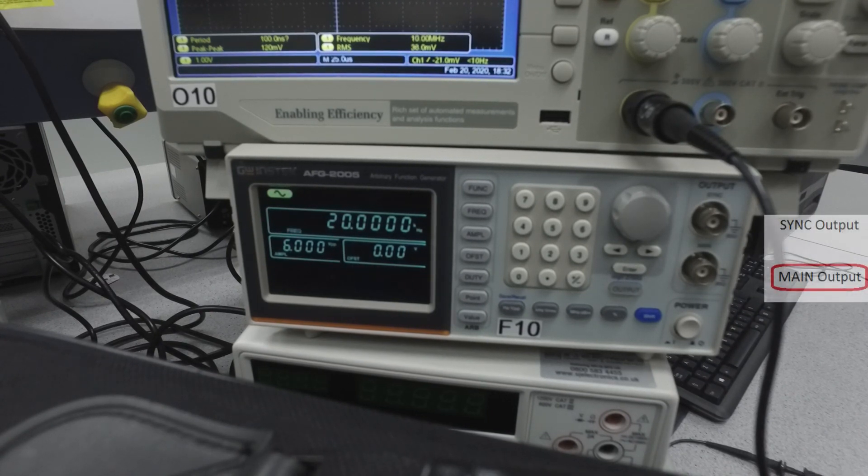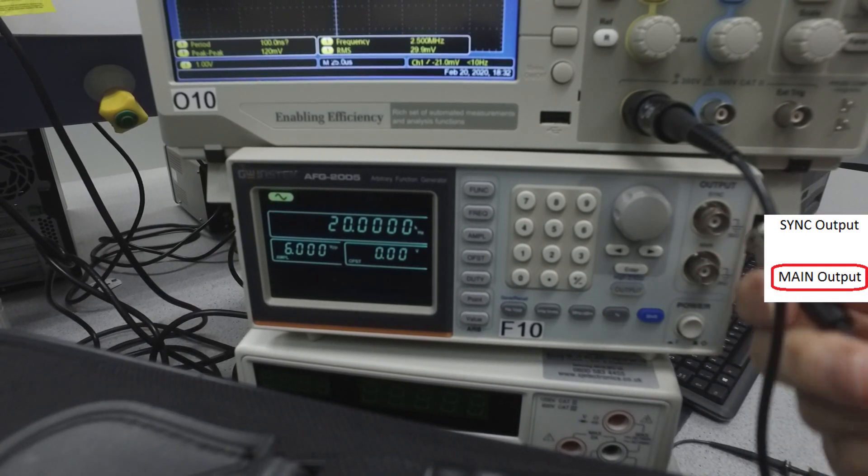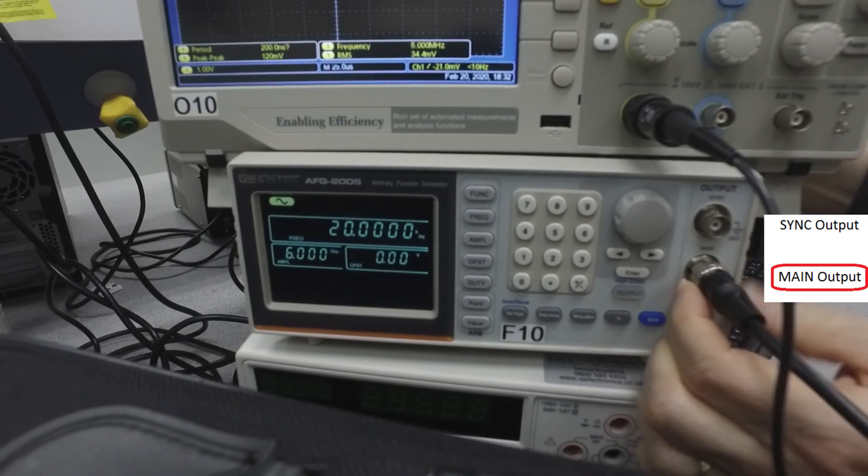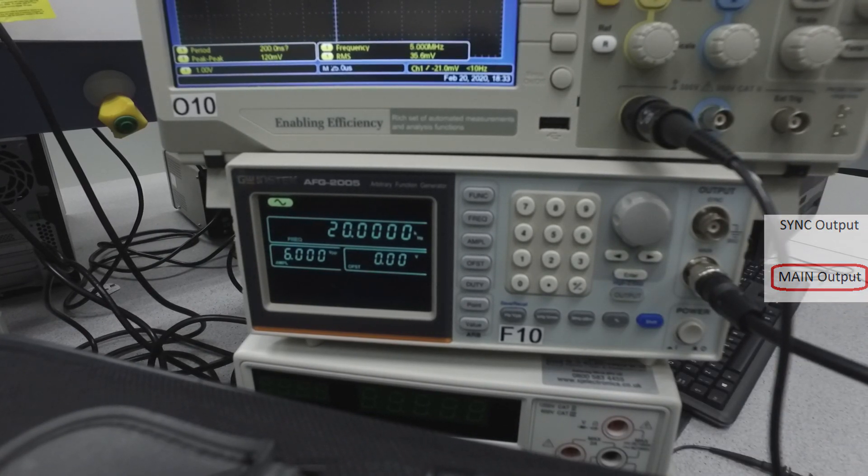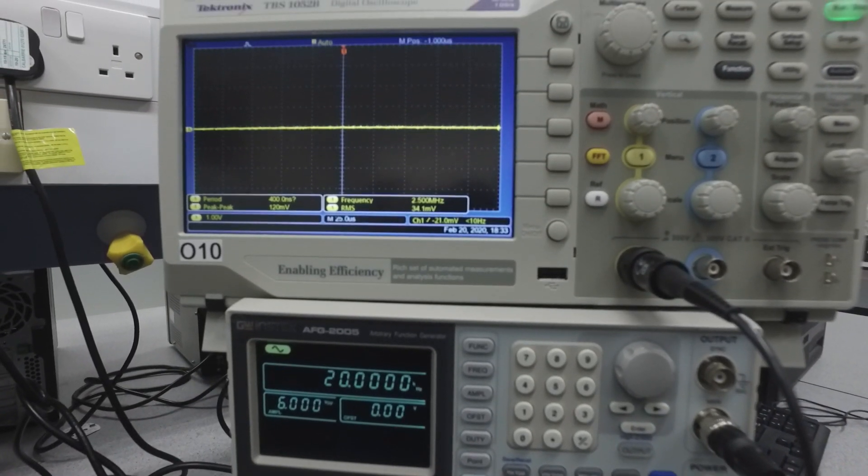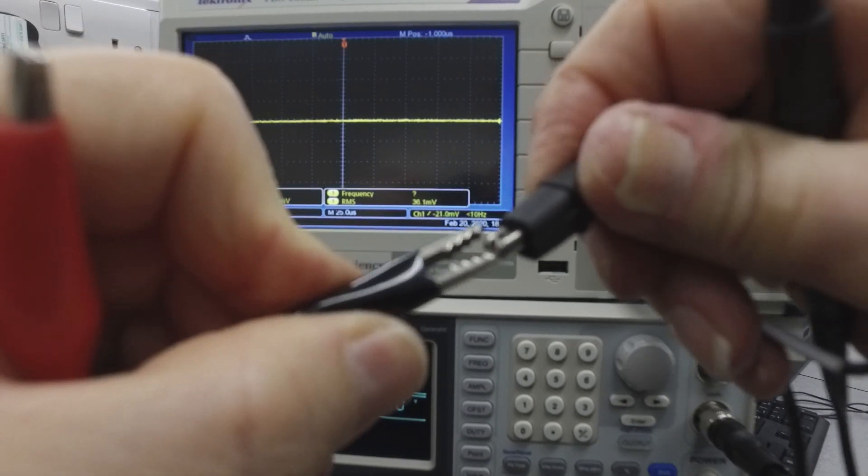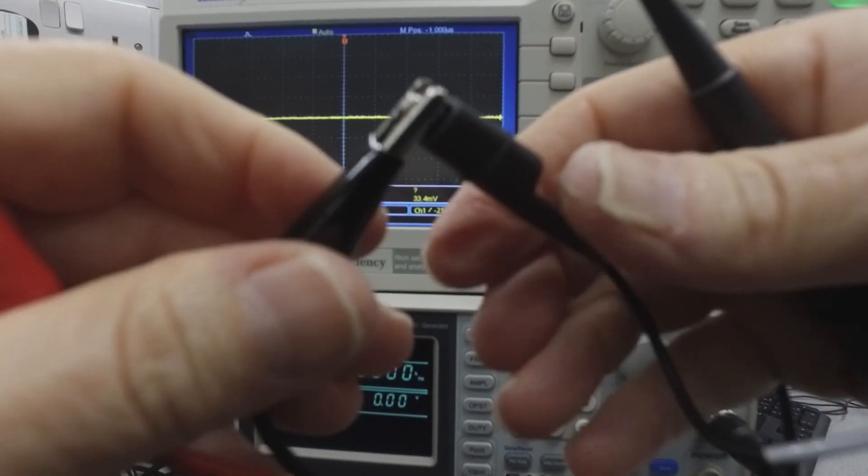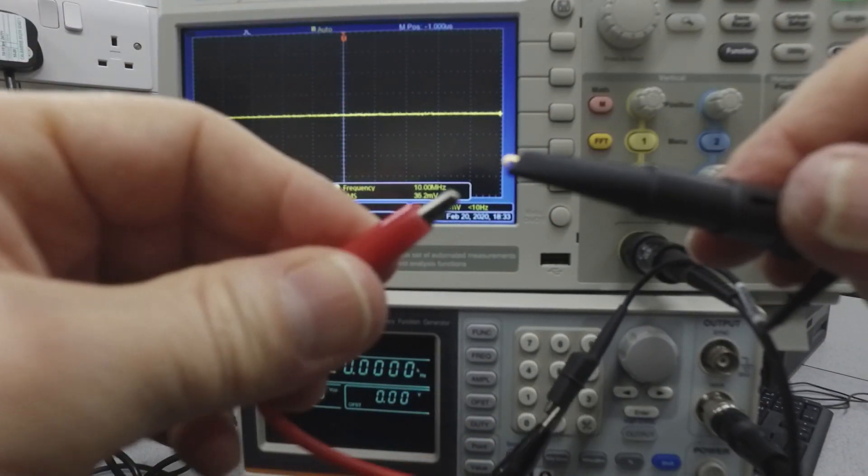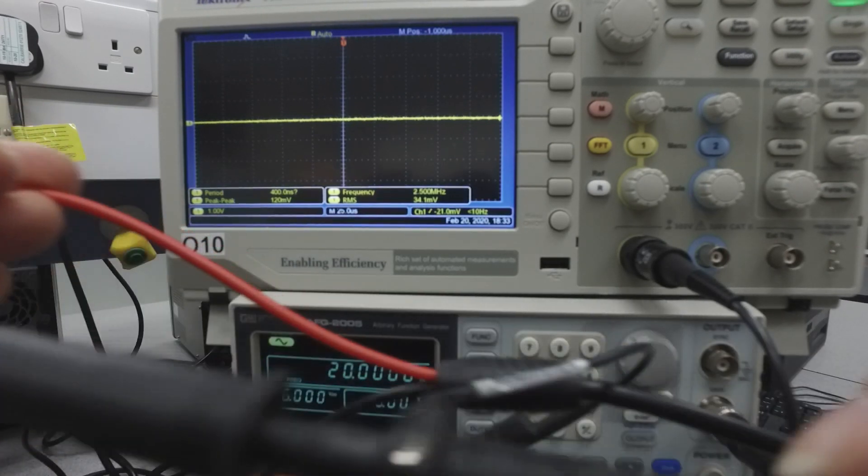So what we'll do is, again, looking at the function generator, which we've set up the values for, we'll apply this to the main on the output. There's two options here. The sync, for synchronizing, and the main, for the main output. Now, if we want to do this in a cheap and cheerful way, we can literally just connect the return lead of the signal generator to the return lead of the scope. Get a better connection in there. And the signal lead of the function generator to the signal probe of the scope. And that's the only connection you'd need for direct measurement.